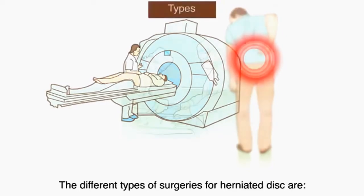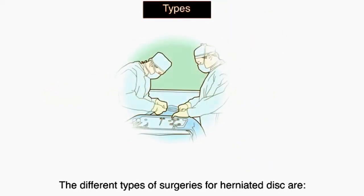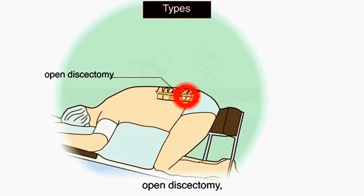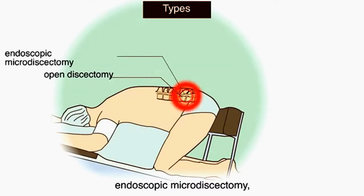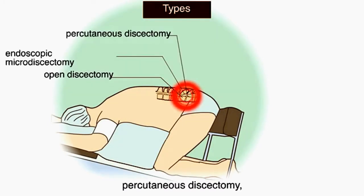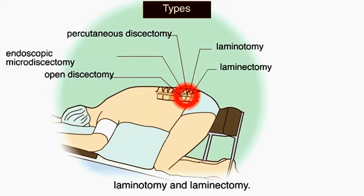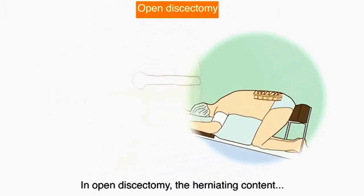The different types of surgeries for a herniated disc are: open discectomy, endoscopic microdiscectomy, percutaneous discectomy, and laminotomy and laminectomy.